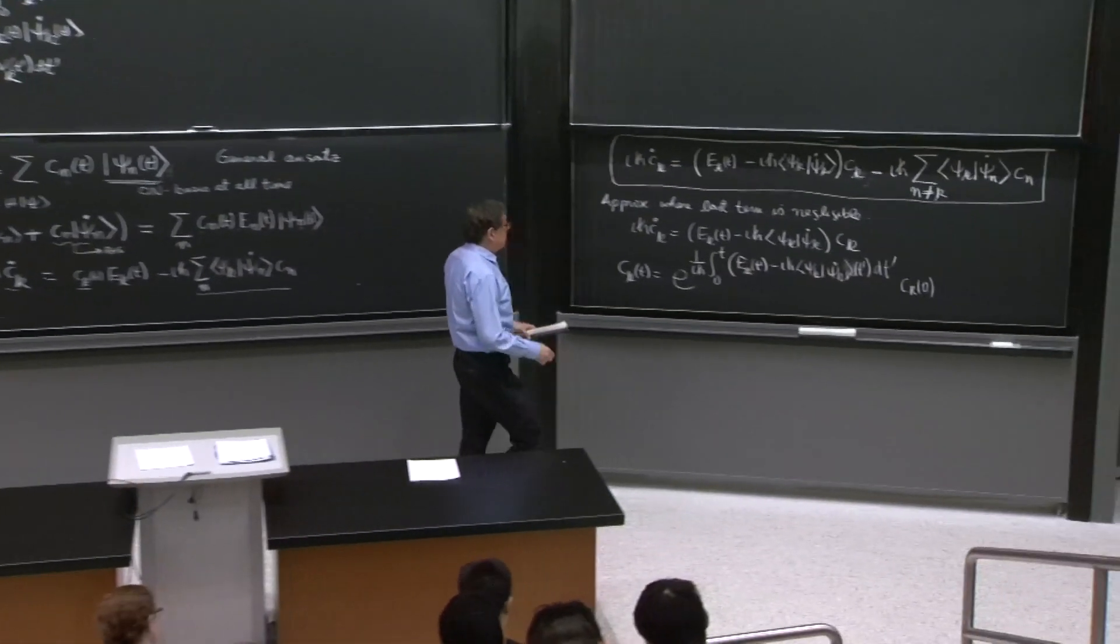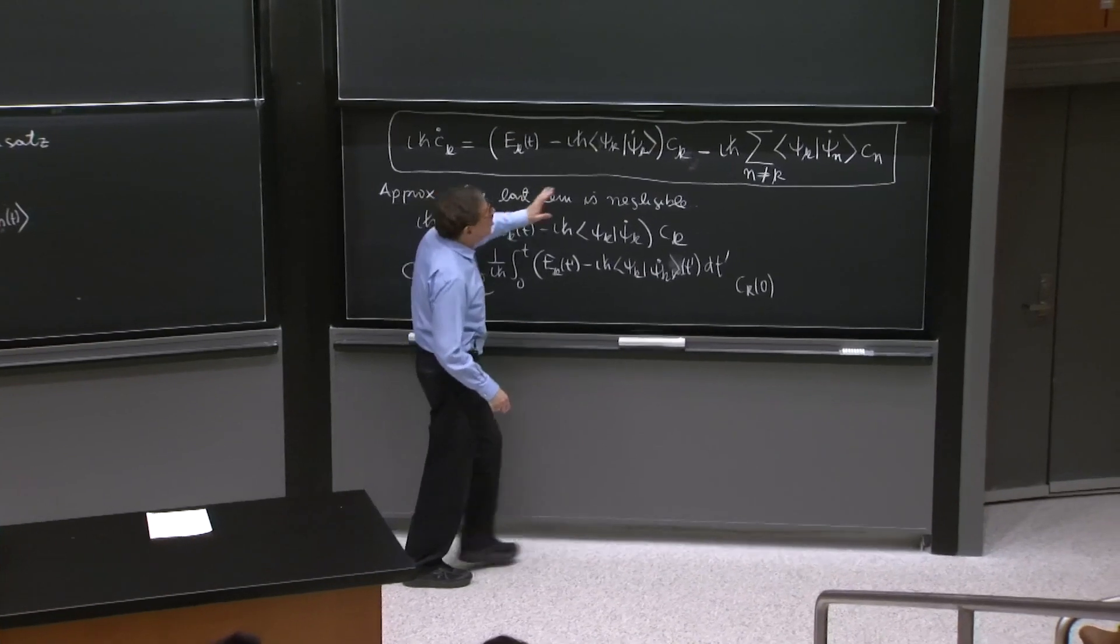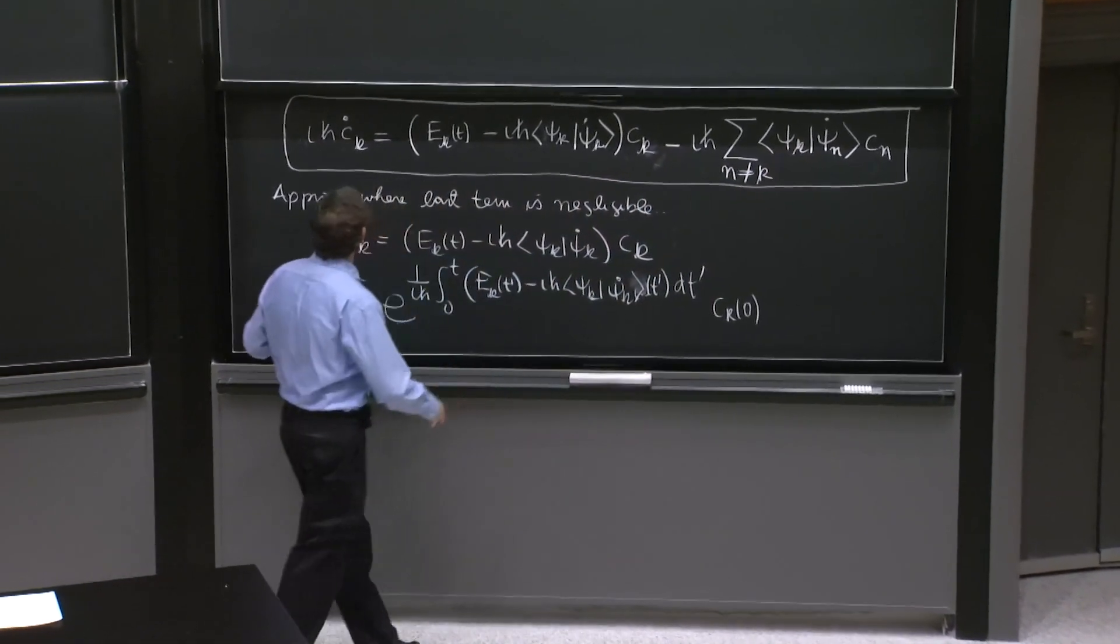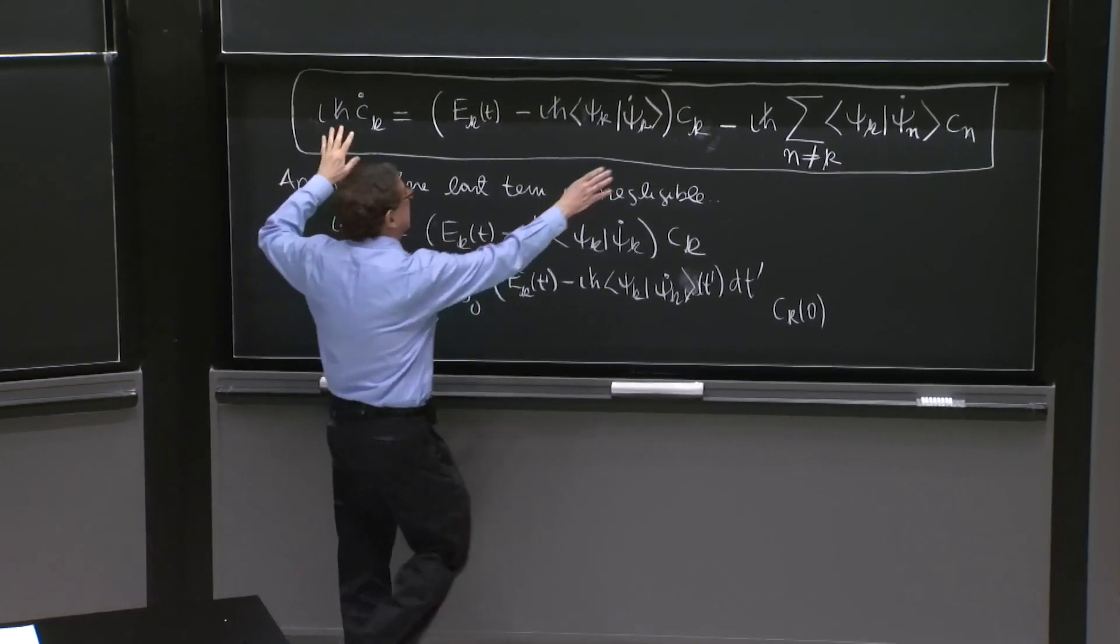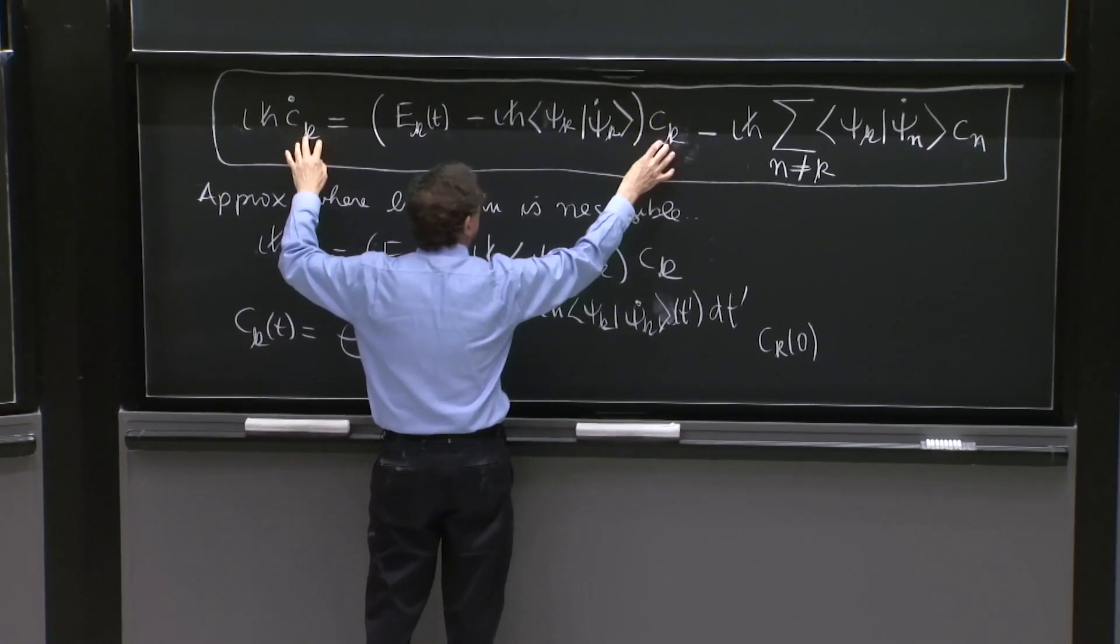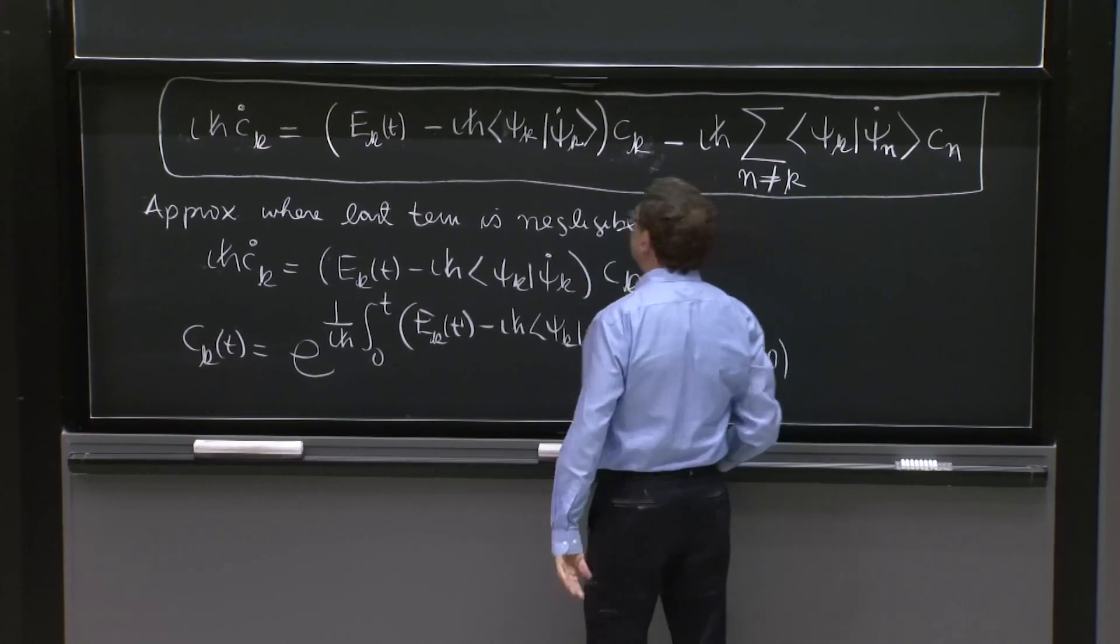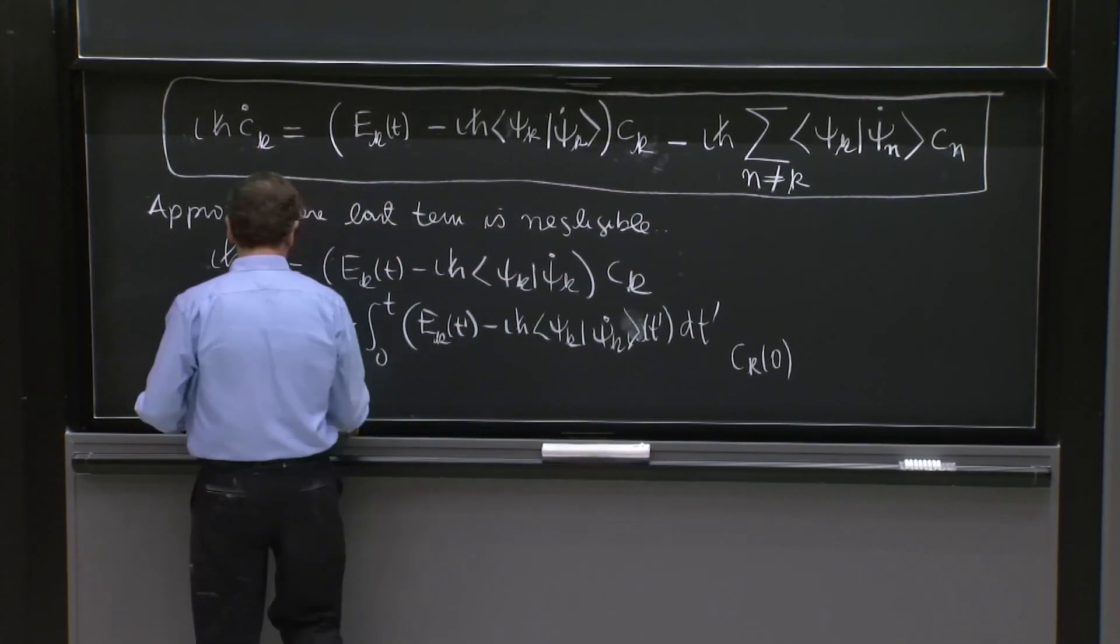So what is new here is that there is a coupling, and you cannot assume that just c k evolves in time, some particular k, and the others don't. The others will get coupled.